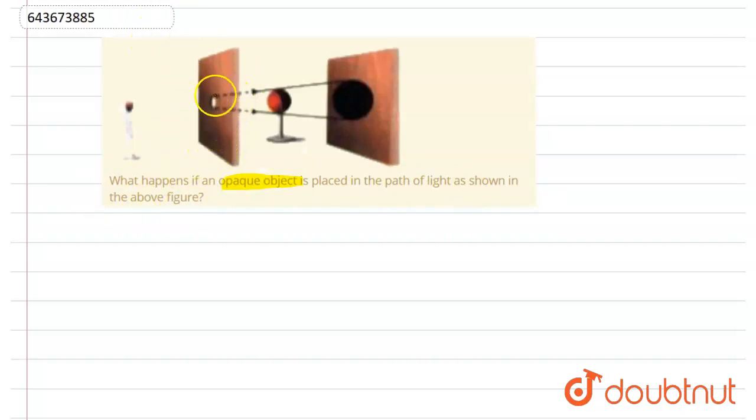In the above figure, what we can see is there is a wooden board through which the light is traveling. Earlier the light ray was reaching the other cardboard, but now we see that